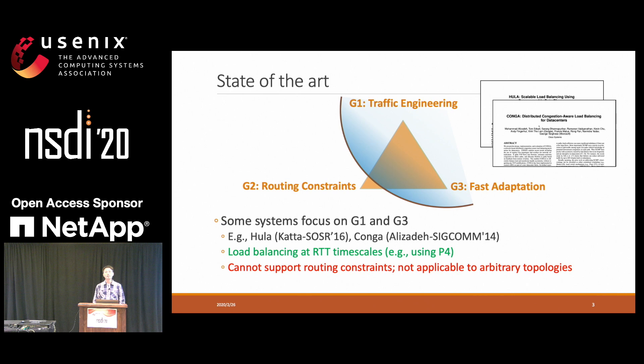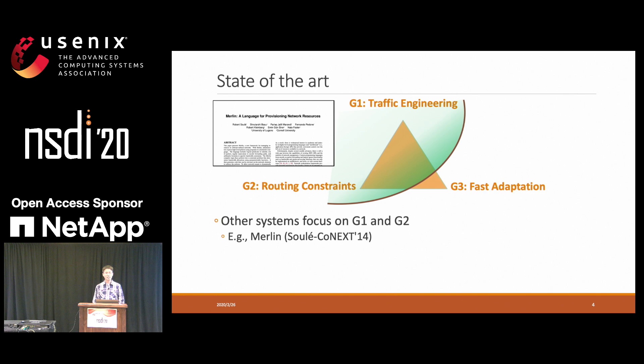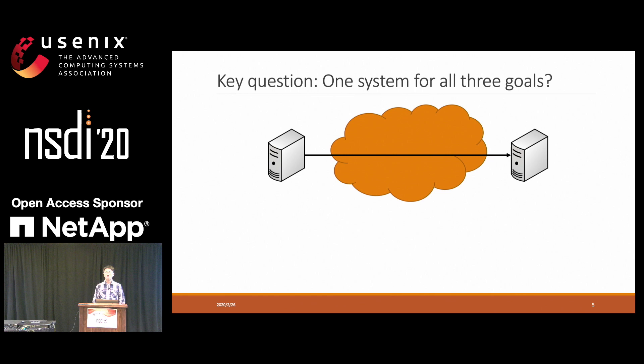On the other hand, another line of work focuses on traffic engineering and routing constraints. For example, Merlin can support path constraints in the form of regular expressions. However, because the traffic engineering of Merlin is implemented in the control plane, it cannot adapt to network conditions fast enough. So the key question is: can we have a single system which can support all three goals?